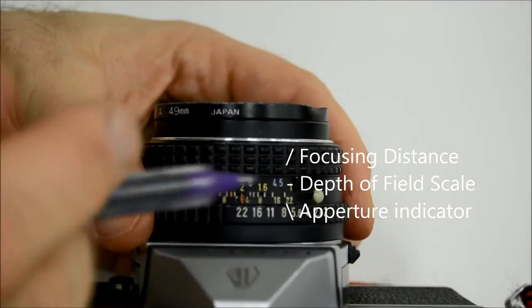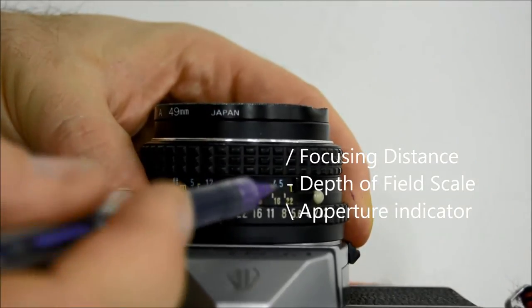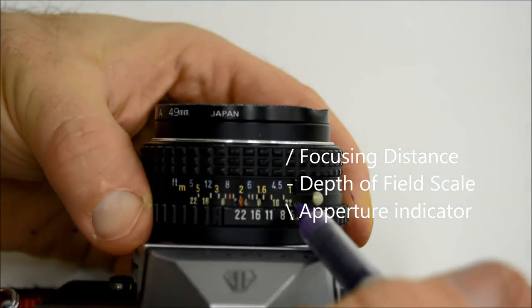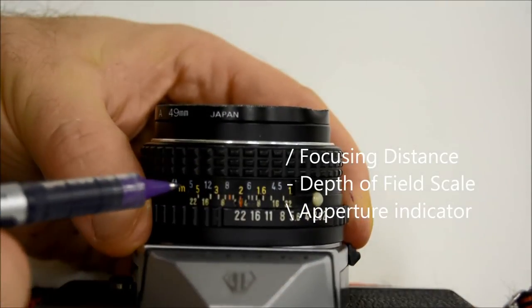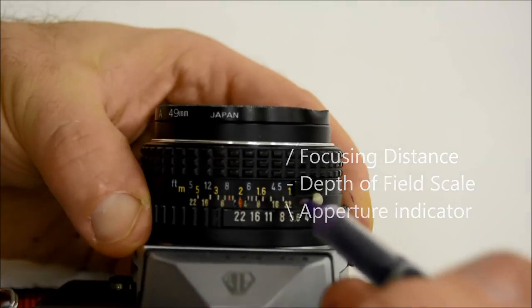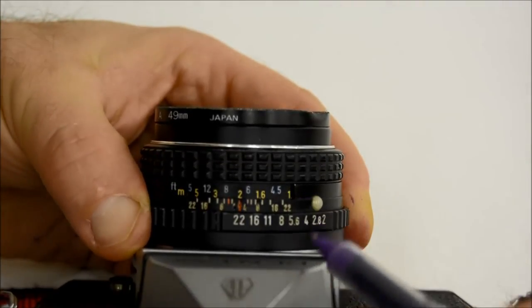At f22, you can read from the far end over here all the way to the far end over here on your distance scale. So in this case, if I'm focusing at 2 meters away, I'm actually going to get things from 5 meters all the way down to 1 meter and a bit in focus.